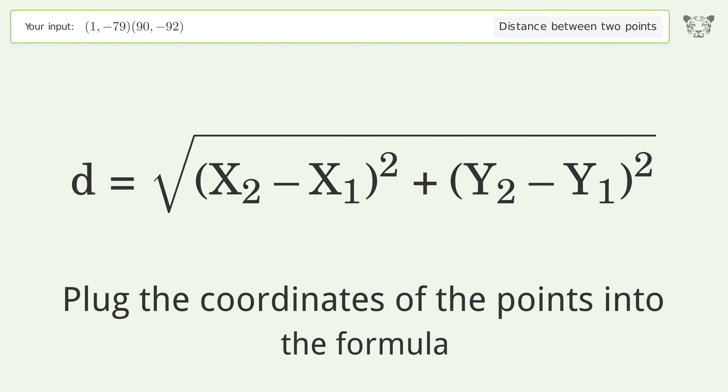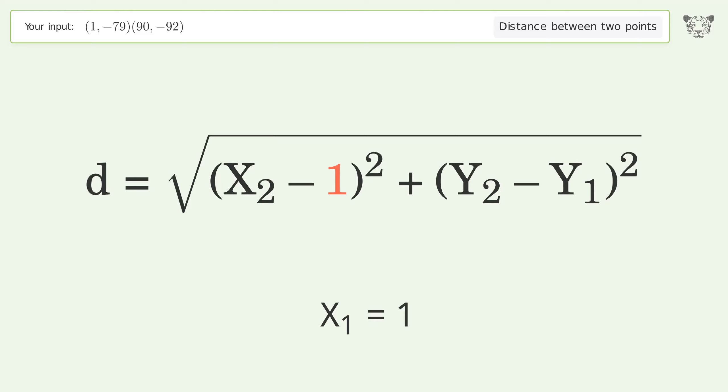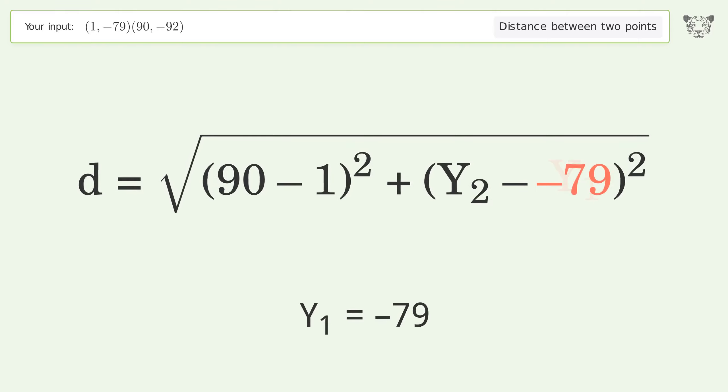Plug the coordinates of the points into the formula. x1 equals 1, x2 equals 90, y1 equals negative 79, y2 equals negative 92.